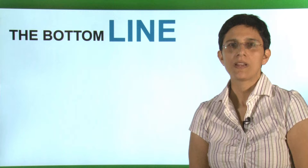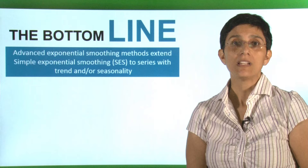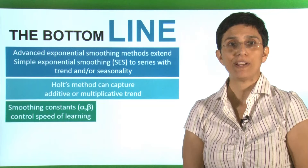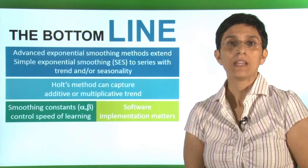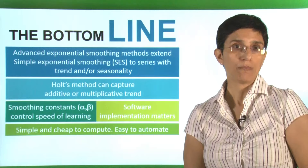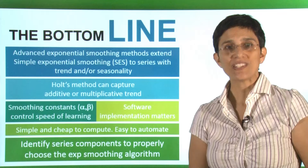In summary, advanced exponential smoothing extends simple exponential smoothing to series with trend, seasonality, or both. Holt's method captures additive or multiplicative trend using two smoothing constants, alpha and beta, which control the speed of learning the level and trend respectively. Implementations may vary across software packages, so be aware of potential differences. These methods are simple and cheap to compute, making them suitable for automation. Finally, it's very useful to identify the components of your series so that you can choose the right exponential smoothing algorithm for your data.